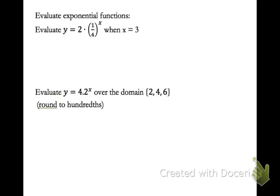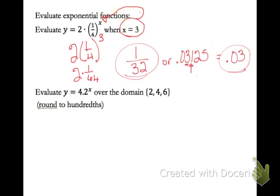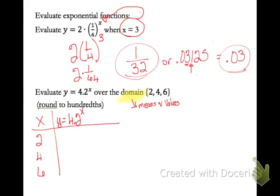The last thing I'm going to ask you to do is evaluate exponential functions. All that means is that you take whatever value for x and plug it in where x is in your function — remember, function is just another name for equation. I'm going to take this 3, put it into my function, and solve. One-fourth raised to the third power is 1/64th, and 2 times 1/64th is 1/32nd, or you could express the answer as a decimal rounded to hundredths. If asked to evaluate a function over a domain — remember domain just means x values — I'll use a table with x values 2, 4, and 6, plug those into the equation, and solve for y, rounding to hundredths.